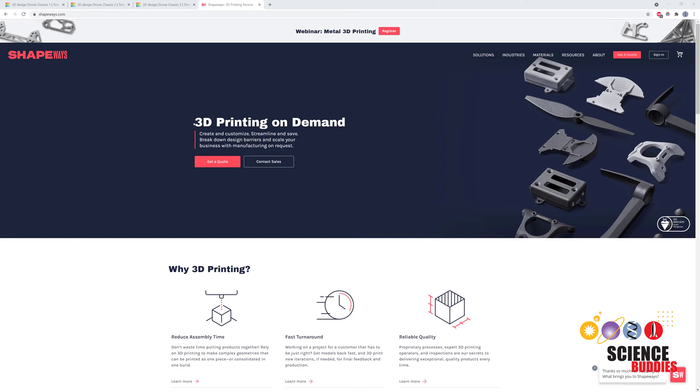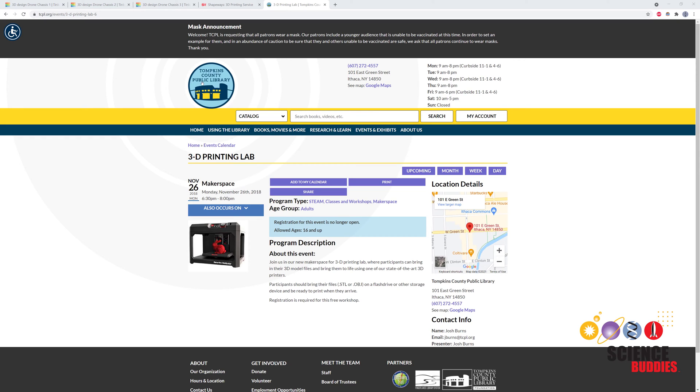If you don't have your own 3D printer, you can use an online 3D printing service or check with a local library or makerspace to see if they have a 3D printer you can use.